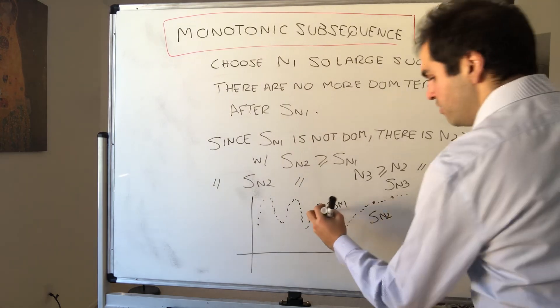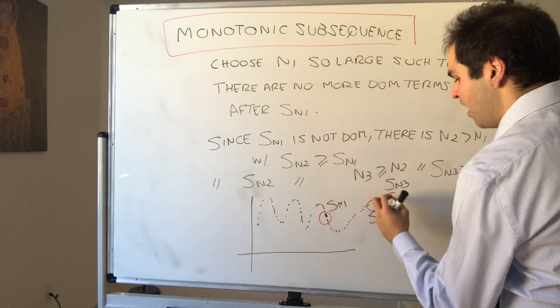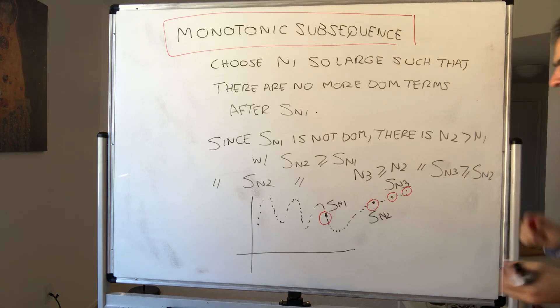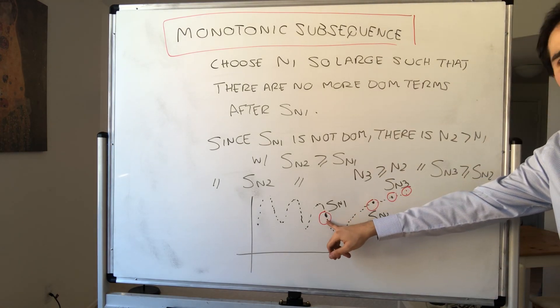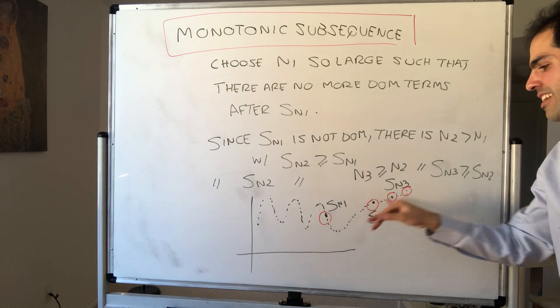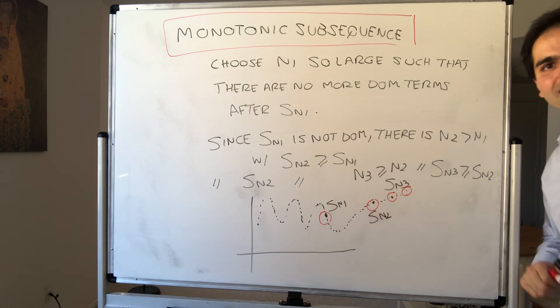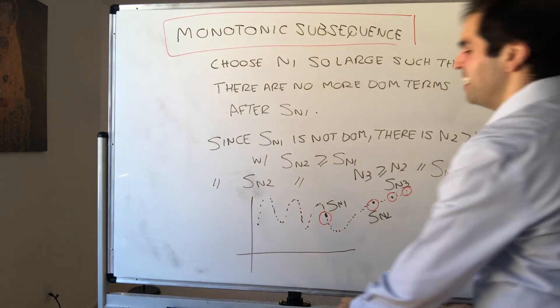But because Sn2 is not dominant anymore, there is Sn3 that's greater than Sn2. There is N3 greater than N2 with Sn3 greater than Sn2, etc. etc. etc. So even given Nk, you can find a term that's greater or equal to this. And interestingly, as I said, because you wanted so badly to have a decreasing sequence, we actually get an increasing sequence of non-dominant terms.